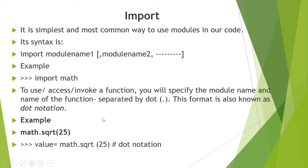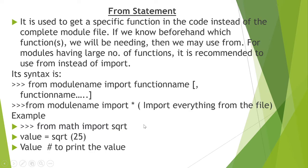To use import, you directly write: import math, or import module name. For using a function from the imported module, you write the module name dot the function name and the arguments. For example, math.sqrt(25) will return 5, because the square root of 25 is 5.